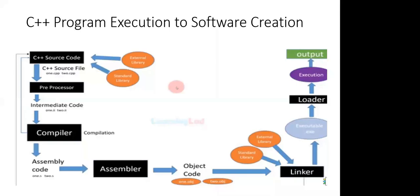The assembler then converts the assembly code into object code (extension .obj) — a file in the form of 0s and 1s, which is understood by the processor. The processor does not understand assembly code or mnemonics; everything must be converted into 0s and 1s. So the assembler converts assembly code 1.s into object code 1.obj.